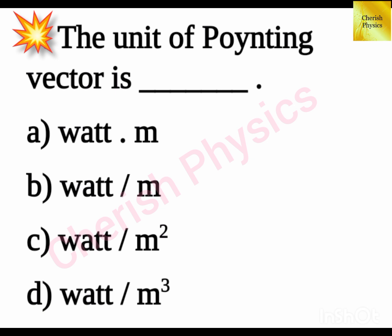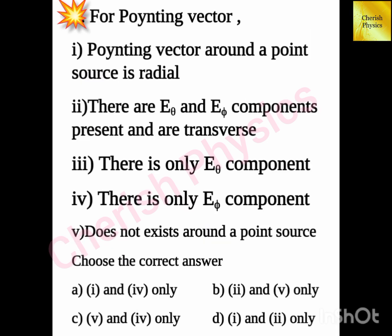The unit of Poynting vector is dash. For a Poynting vector, read the given options and choose the correct answer.